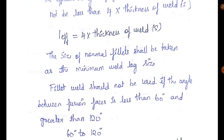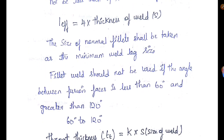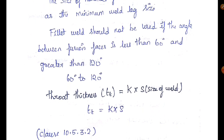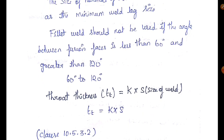The size of a normal fillet shall be taken as minimum weld leg. If we have any size of weld, we will note it. Fillet weld should not be used where the angle between fusion faces is less than 60° or greater than 120°. So the fillet weld is used at angles between 60° and 120°.